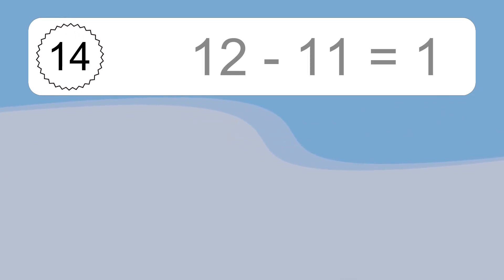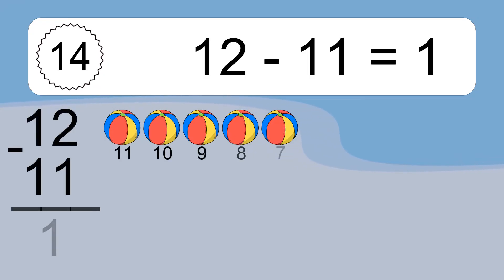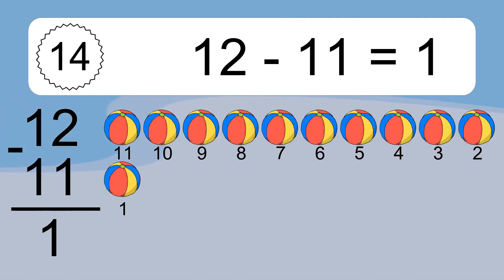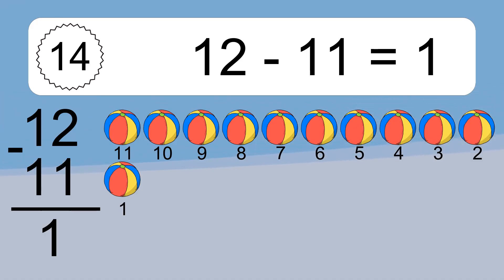12 minus 11 equals what? 12 minus 11 equals 1. Let's count it: 11, 10, 9, 8, 7, 6, 5, 4, 3, 2, 1.